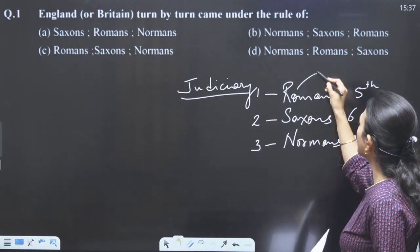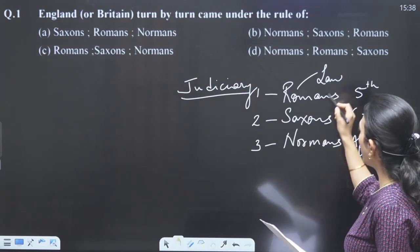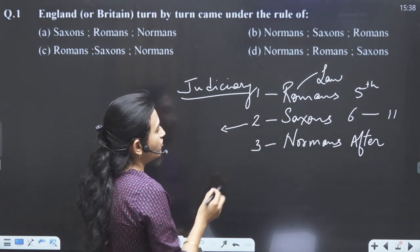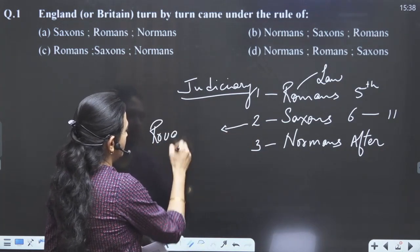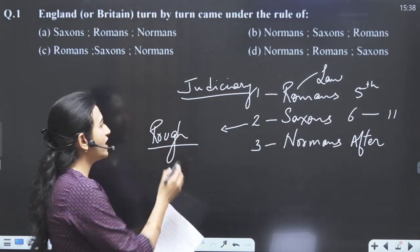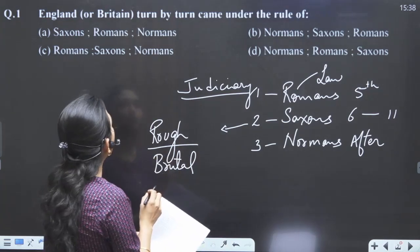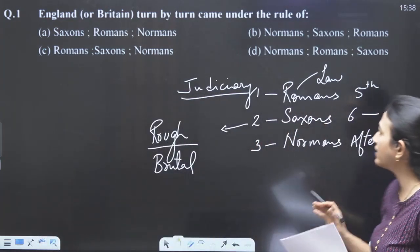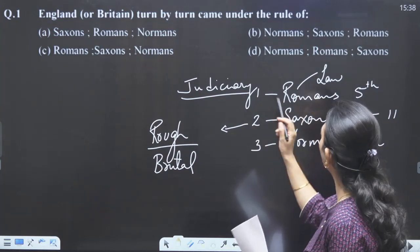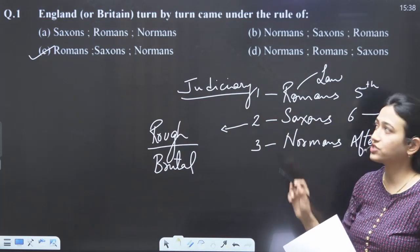Romans gave quite reasonable punishments — they had law. Saxons did not have law; they had rough judgment — either scot-free or brutal punishments. In the first question, we just want to know who came first, second, and third. Answer: first is Romans, then Saxons, then Normans. Our answer for the first question is C.